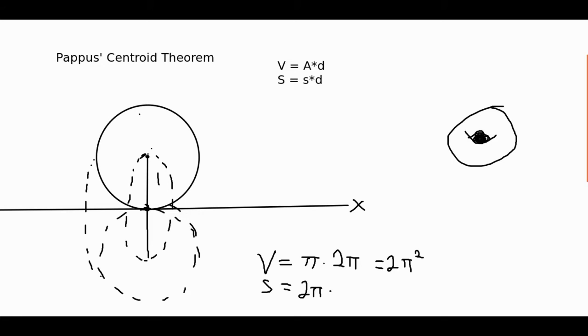But this is not always the case. If we have a triangle, the centroid of the triangle might be somewhere here. But the centroid of the surface, if we're making a cone by rotating it this way, the surface would be this part. The centroid would be the middle of the hypotenuse.